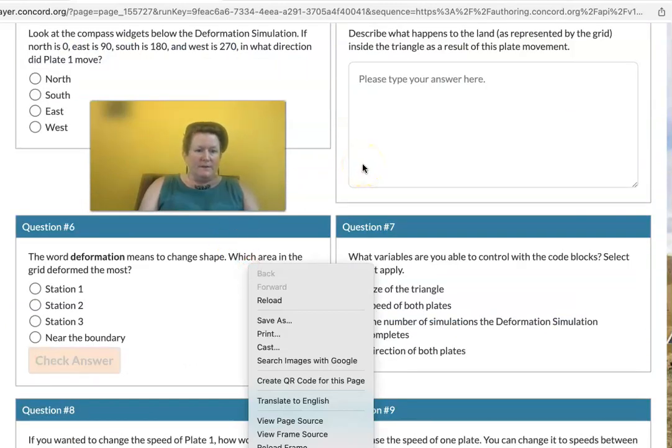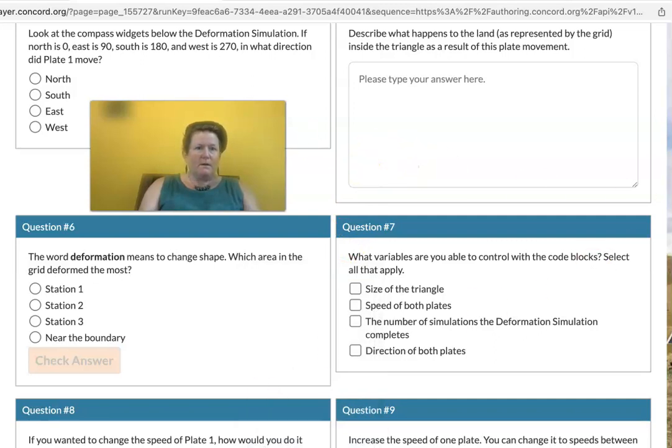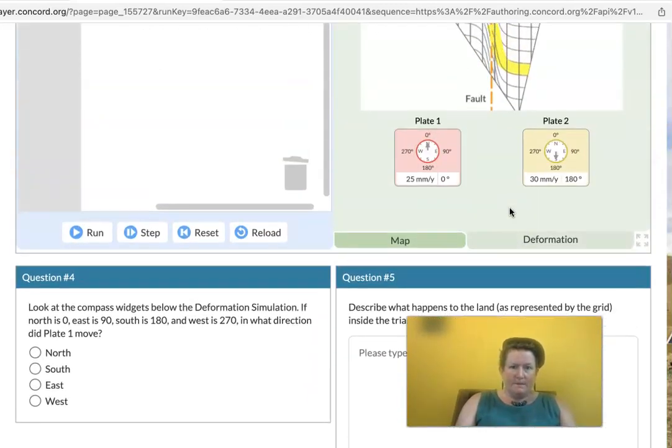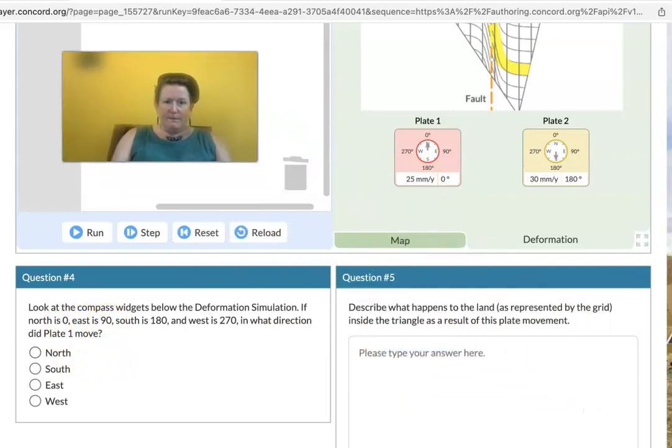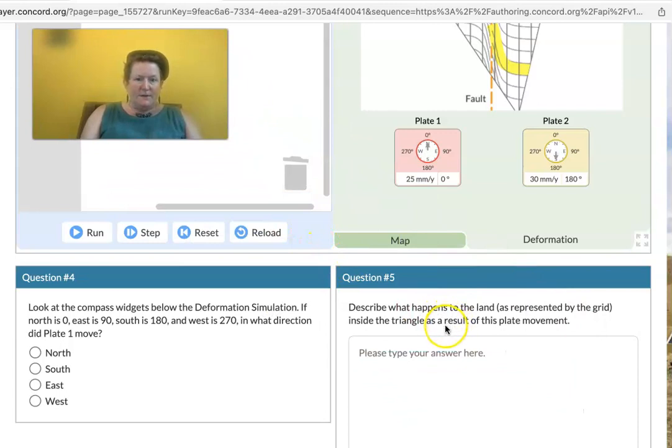We can look at the compass widgets below the deformation simulation. So right here and right here. If north is zero and east is 90, south is 180 and west is 270, in what direction did plate one move? We've got it right here. And you can see it's zero degrees. So zero degrees is right there for you. Describe what happens to the land as represented by the grid inside the triangle as a result of this plate movement.